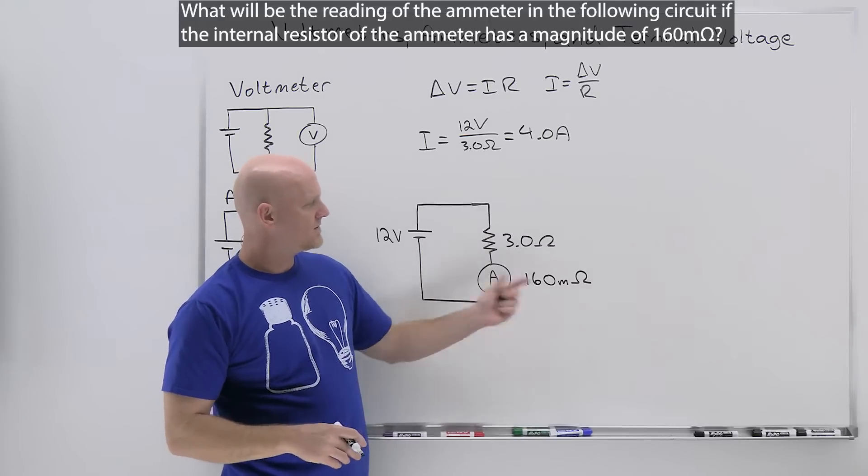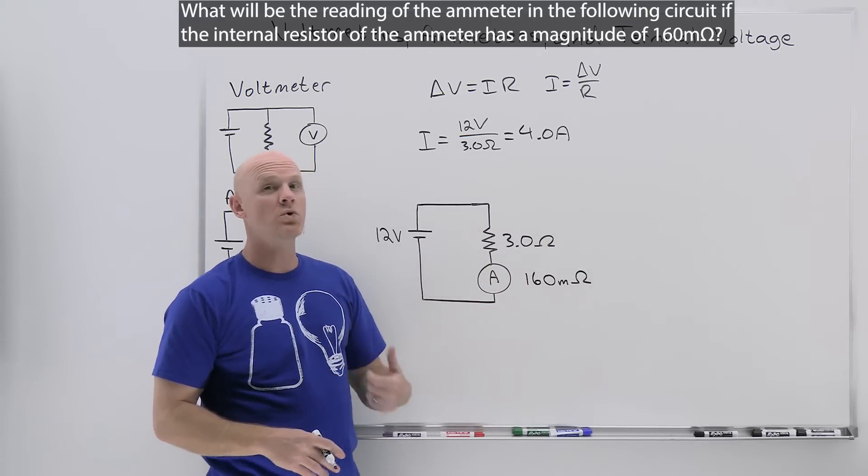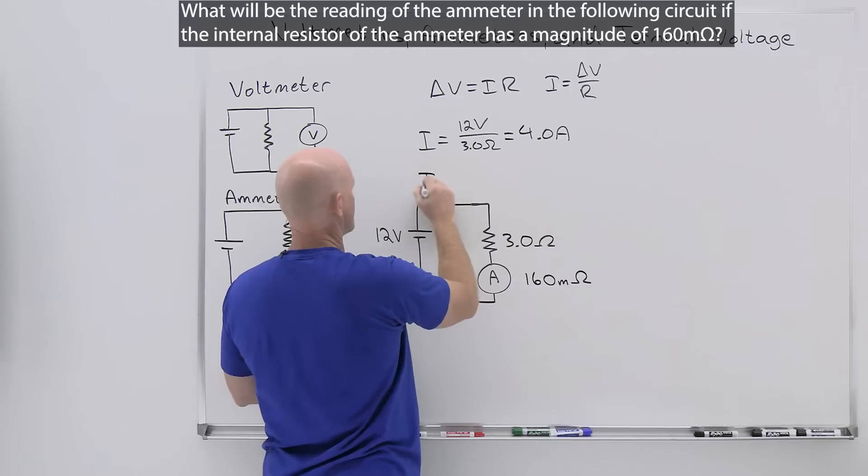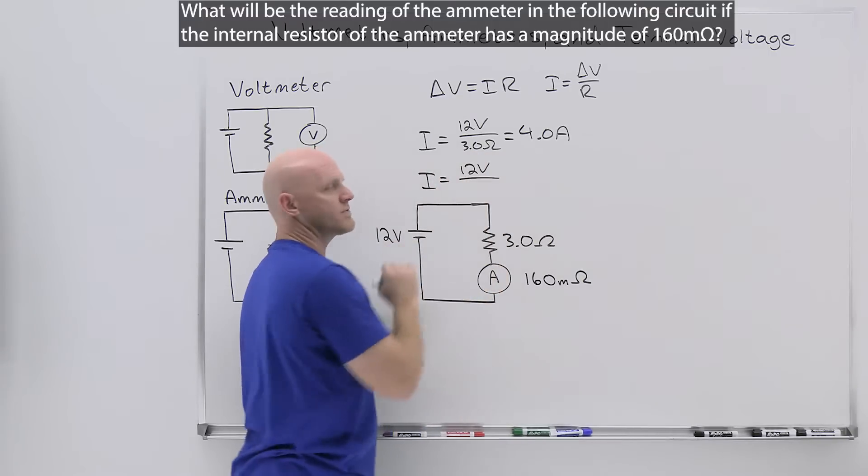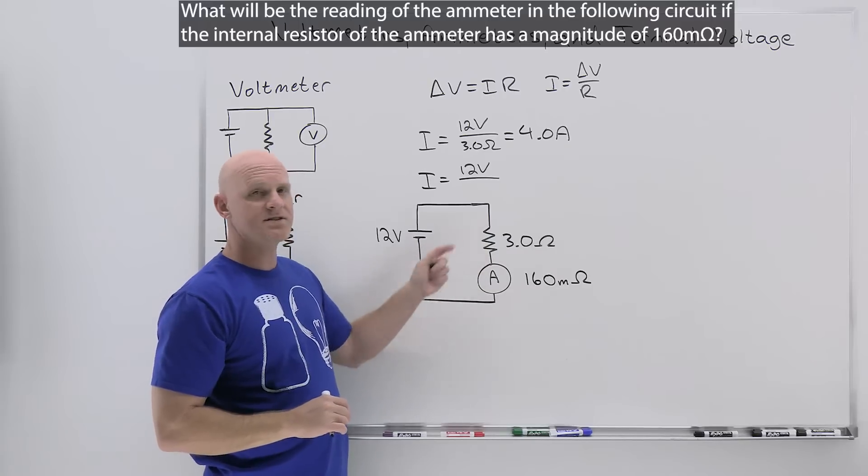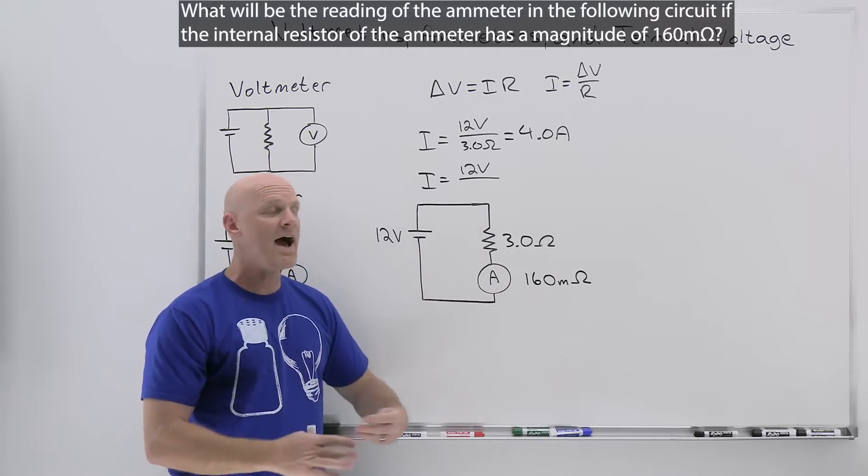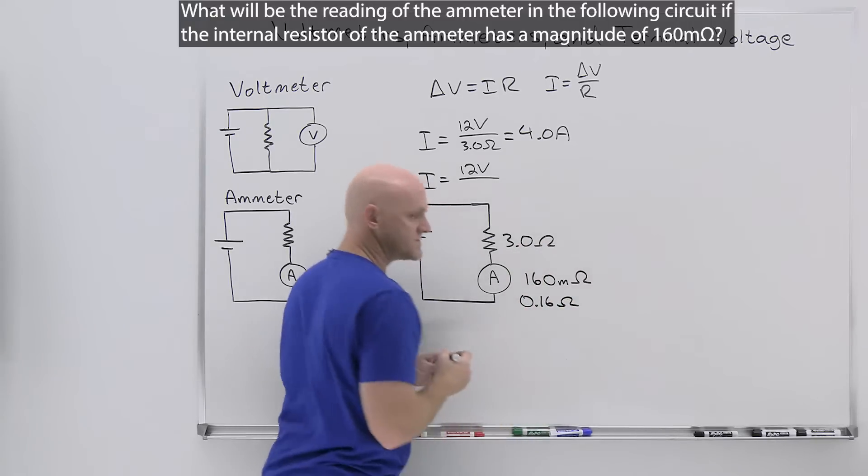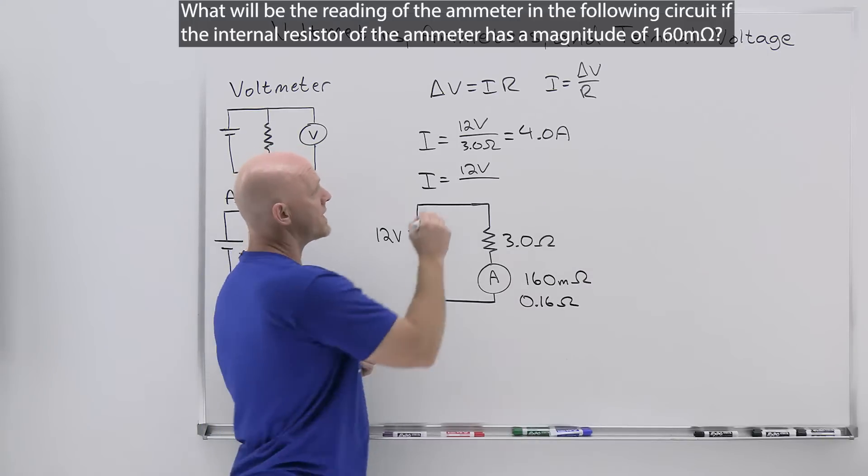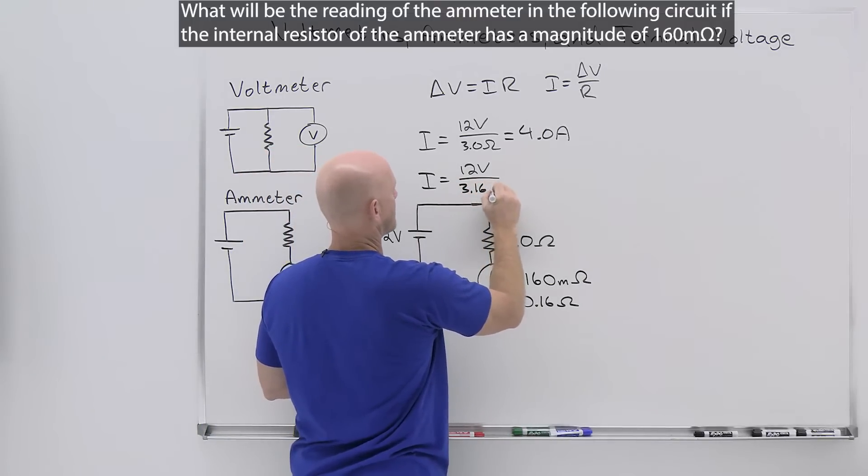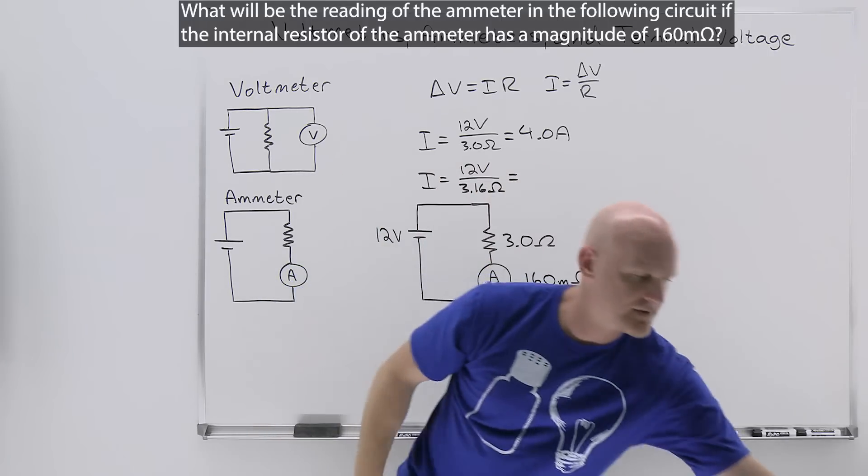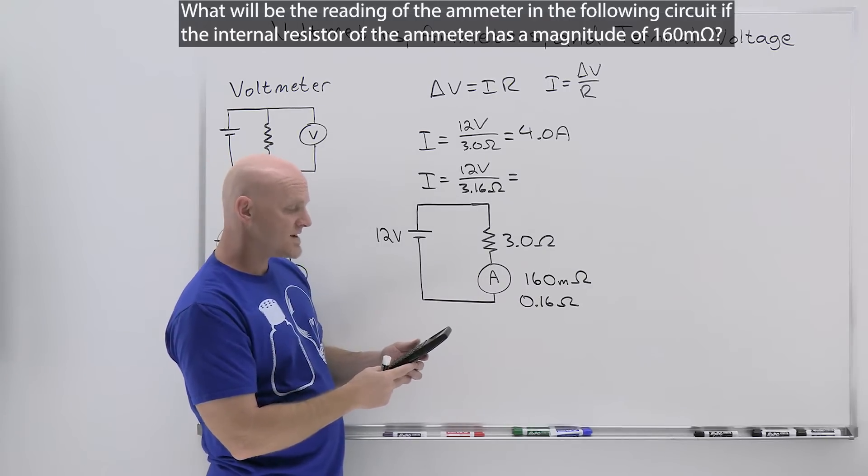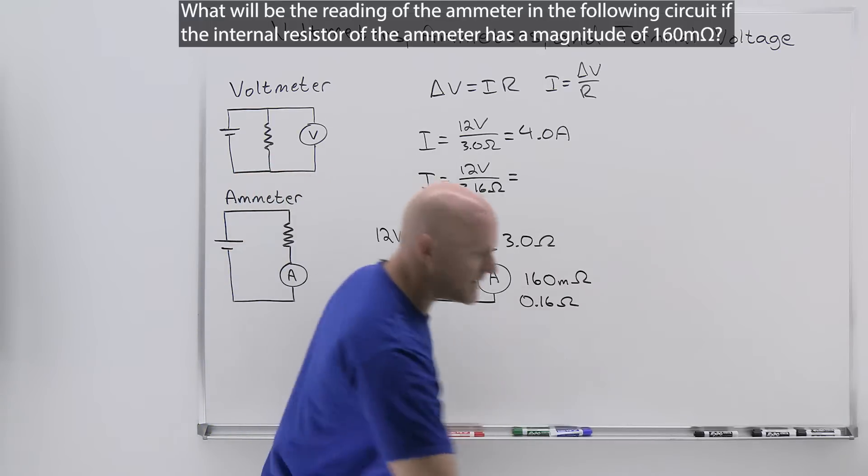Now what happens if we include the ammeter, which has 160 milliohms, or 0.16 ohms? Once again, we'd have to do this calculation: I equals 12 volts, but it wouldn't be over 3.0 ohms. In this case, the equivalent resistance - and for two resistors in series, it's purely additive - we'd take the 3 ohms and add to it 0.16 ohms in the same units. That's easy enough to see that we get 3.16 ohms. So now we'll let our calculator do the heavy lifting. 12 divided by 3.16 is now 3.797, we'll round that to 2 sig figs, 3.8 amps.